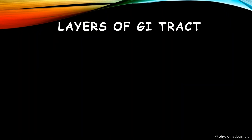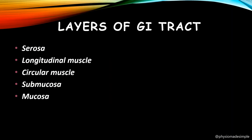The GIT has 4 layers. The first and outermost layer is called the serosa or the serous layer, which is a fibrous layer that helps in connecting the other structures with the digestive system and keeps the organs in their proper position.